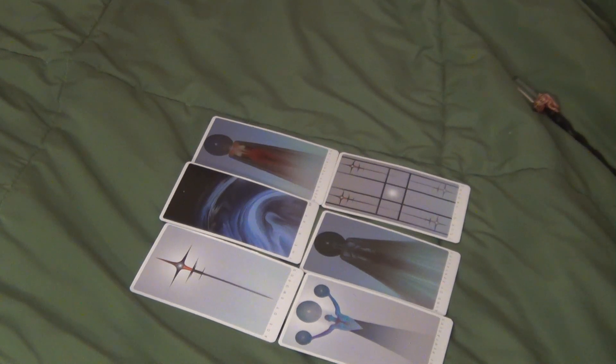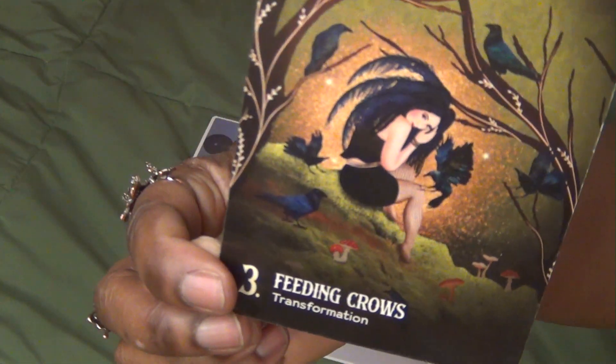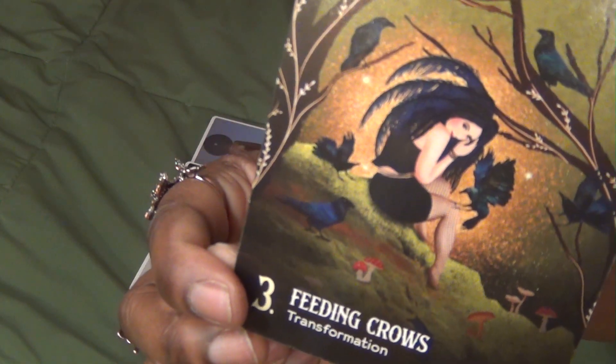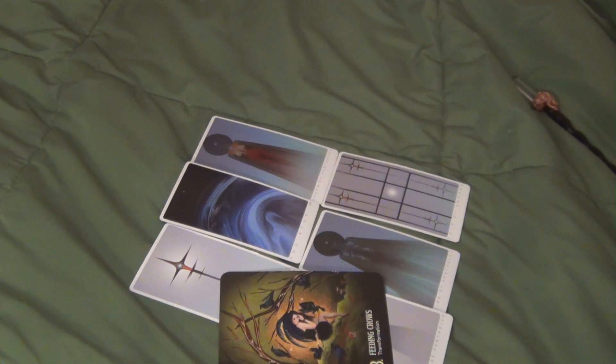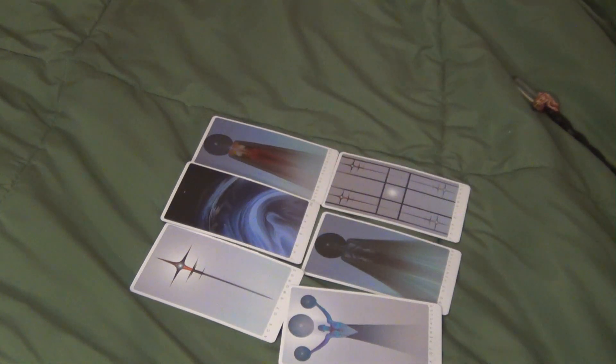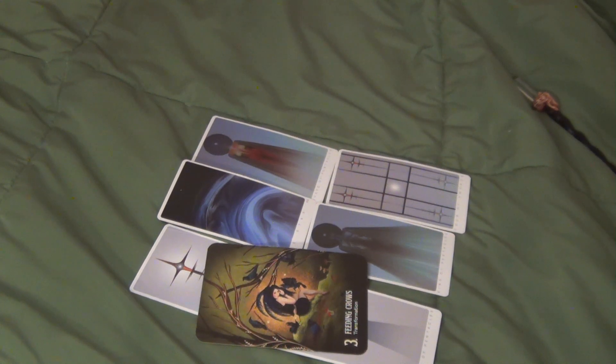Cancer, we got the feeding crows transformation. So you're going through a transformation at this time. Some of you could just be really going through it. Look at her, she is like, oh my God. The crows are probably making all types of noise and pecking at her head and just feels disturbed. It's just the energy of feeling disturbed here. For some of you, but for others of you, you definitely are going through a transformation. Some of you may want to be left alone. There's just too much going on. So you're definitely needing to transmute energies, distractions, things like that.